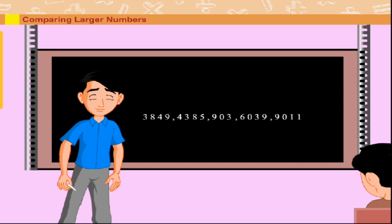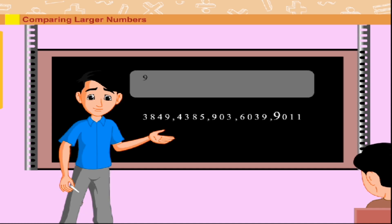Out of the remaining four numbers, he compares digits of the numbers at the thousands place. Nine is greater than six, is greater than four, is greater than three.